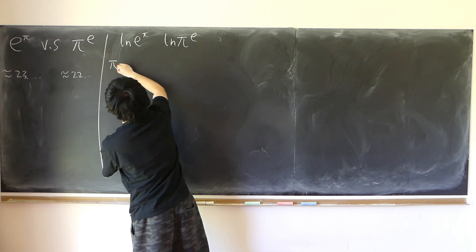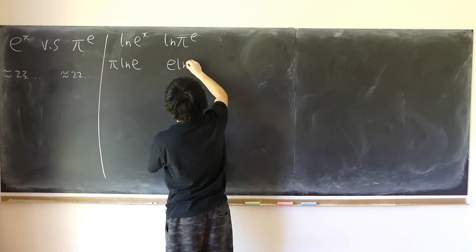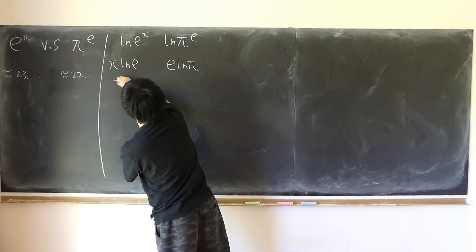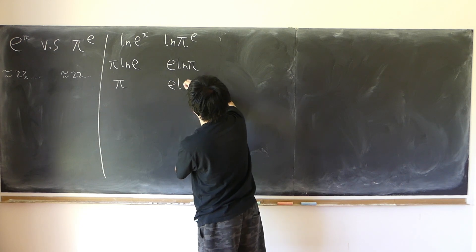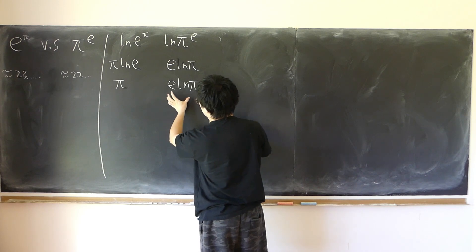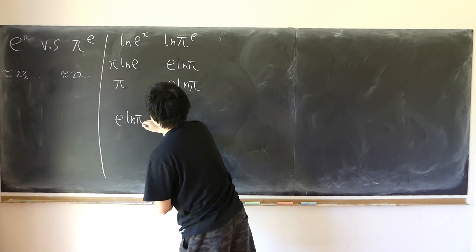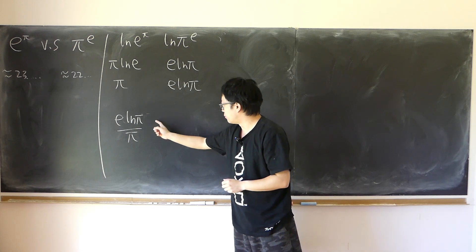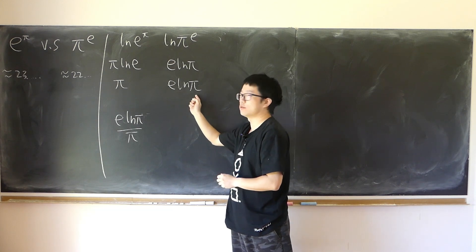So this is equal to pi log e. This is e log pi. Just have to compare those two. But this is already pi, and this is still e log pi. And maybe we can just divide by e, so we can calculate e times log pi divided by pi. If the result is bigger than one, that means this one is bigger. If it's less than one, which means this will be smaller.